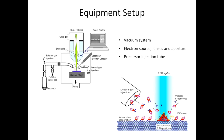First let's look at the equipment setup. The equipment setup for focused electron beam induced deposition is actually similar to the setup of SEM. It's composed of three parts: the vacuum system, the electron generation system, which consists of the electron beam source, lenses and aperture,